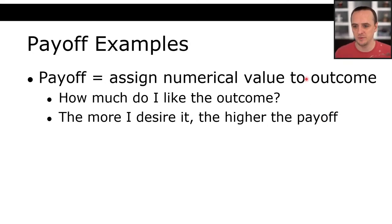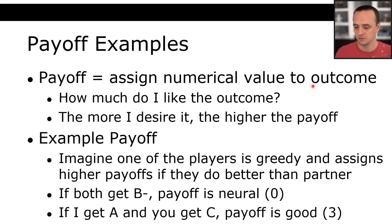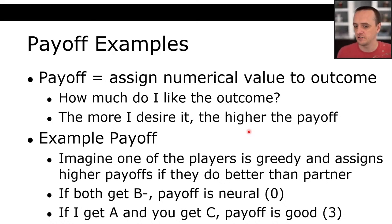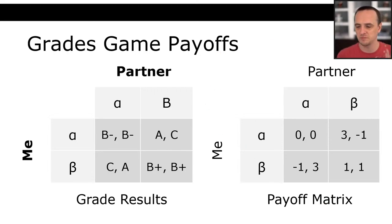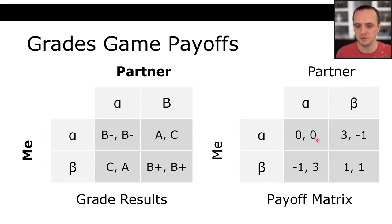Now that we have payoffs, what should you do? You're trying to maximize your payoff. We first look at all the choices our partner could make. If they choose alpha, I get 0 for alpha and negative 1 for beta — so alpha is best. If they choose beta, I get 3 for alpha and 1 for beta — alpha is still best. So alpha is my best choice no matter what. You would be foolish to choose beta in this particular payoff matrix.